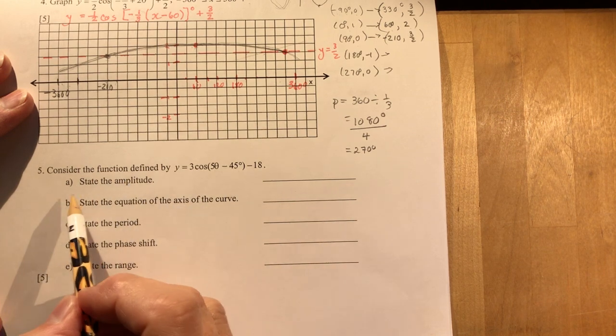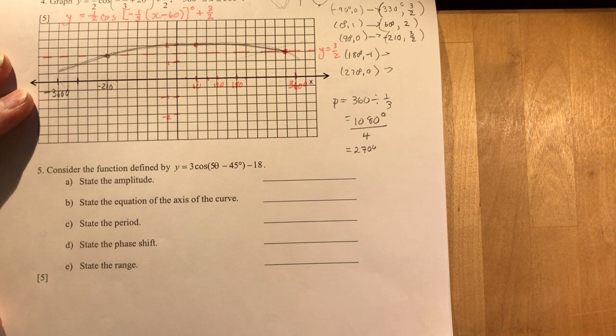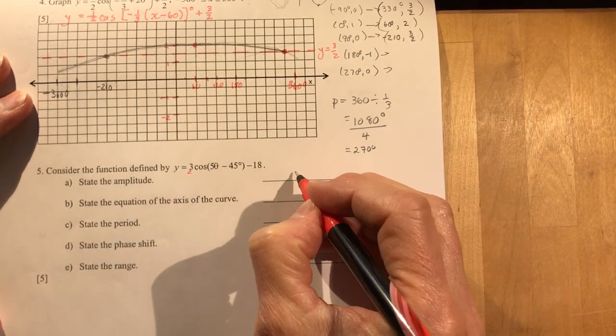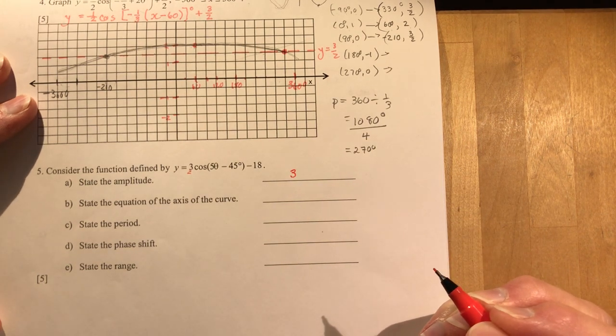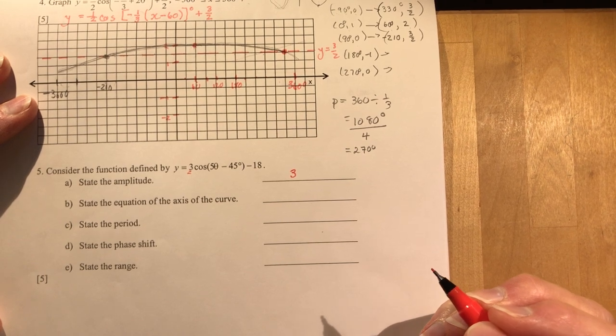In question five, it says consider this function, state the amplitude. Well, if you can't get the amplitude, go back to grade 10. We already know what it is right here. Three. Amplitude is three. It's always a positive value. So even if that says negative three, you don't say the amplitude is negative three. It is three.